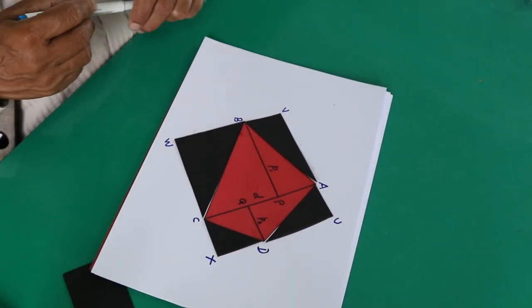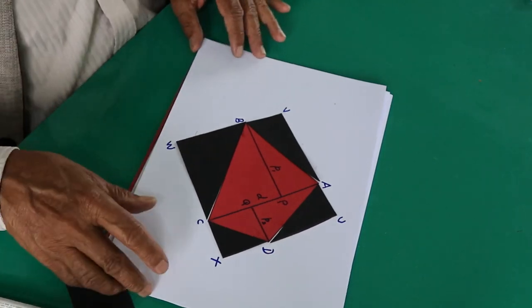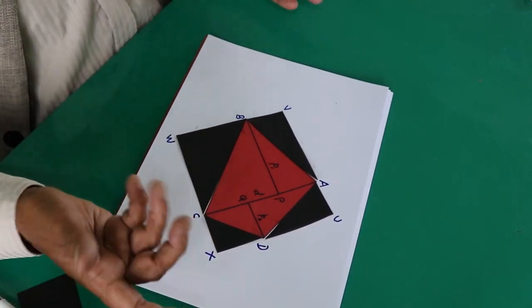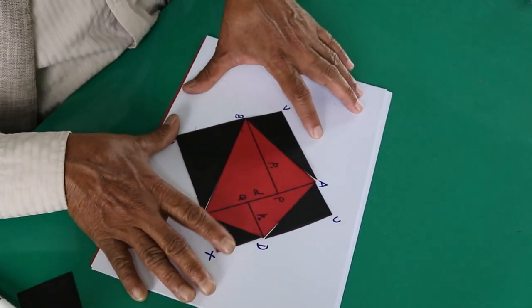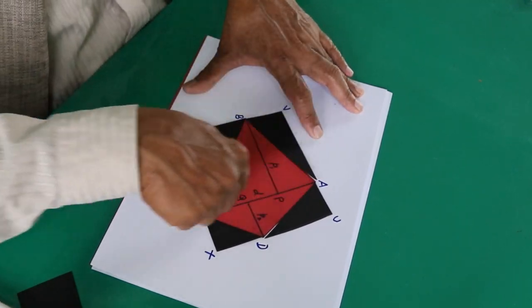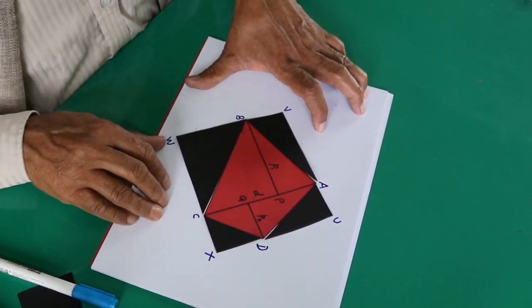And the area of the rectangle is universally known to everybody, so that is length into breadth. Everything is length into breadth interpreted in terms of the diagonal and the sum of offsets. That's it.